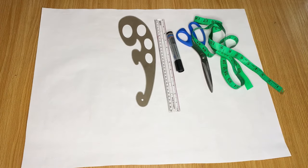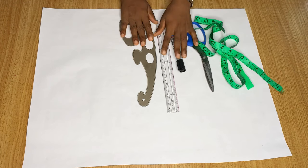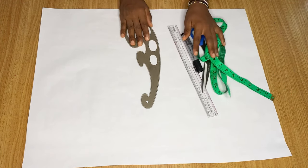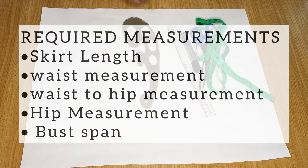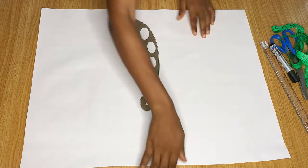So these are the materials I'm going to be using to draft out this pattern. The measurements you'll need to draft your basic skirt pattern are your skirt length, your waist measurement, waist-to-hip measurement, your hip measurement, and your bust span — which is also referred to as your nipple-to-nipple measurement.